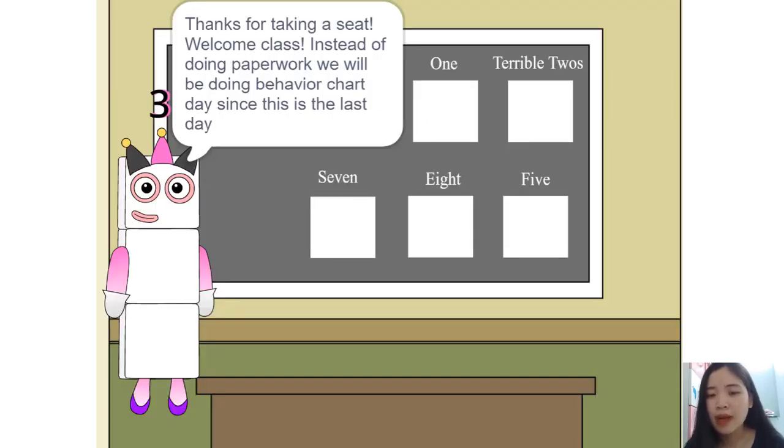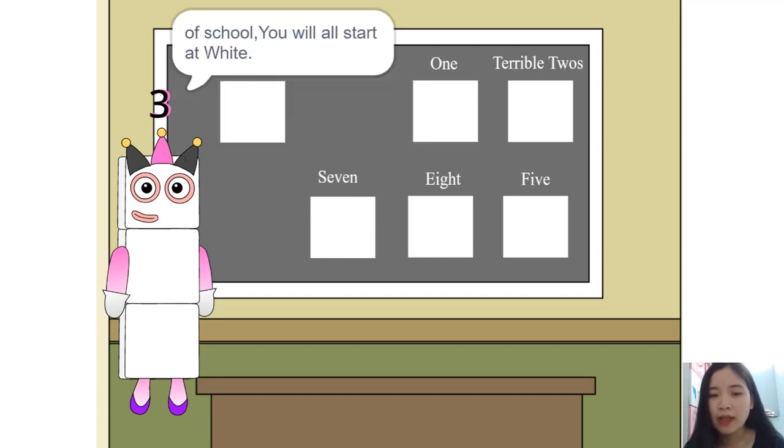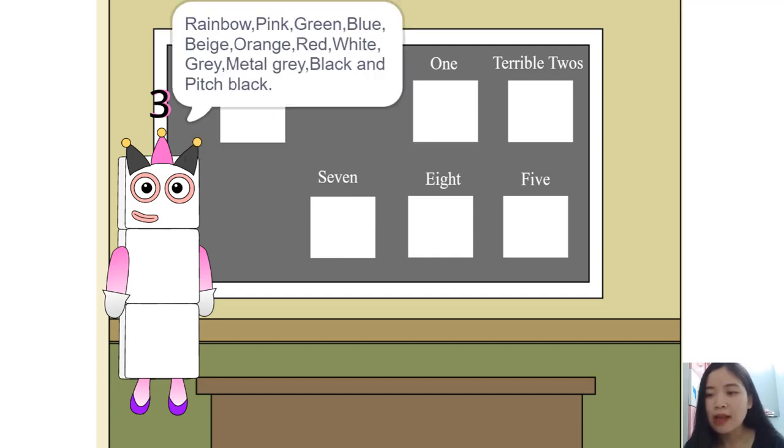Thanks for taking a seat. Welcome class. Instead of doing paperwork, we will be doing behavior chart day since this is the last day of school. You will all start at white. The colors are rainbow, pink, green, blue, beige, orange, red, white, gray, metal gray...